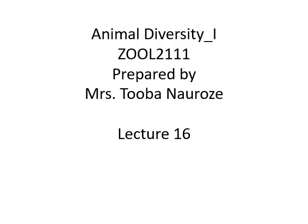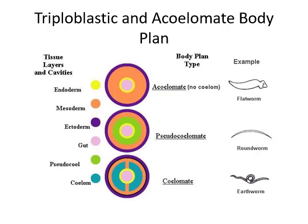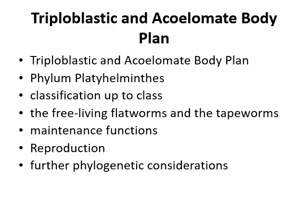Animal diversity, Lecture 16: Triploblastic and Acoelomate Body Plan. The diagram shows tissue level organization containing ectoderm, mesoderm, and endoderm, and distinguishes between having a false cavity and having a true body cavity. This chapter discusses the triploblastic and acoelomate body plan.